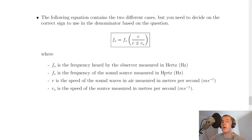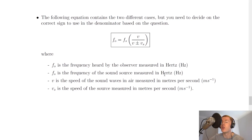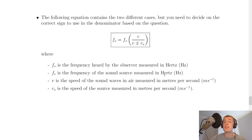How might you remember which sign is positive and which is negative? Here's a funny way to remember it. If an ambulance is coming towards you, that's a negative thing — it suggests you might need an ambulance if you're injured — so you use a negative sign in the denominator. Whereas if an ambulance is moving away from you, that's a good thing because it suggests you don't need one — so that's a positive sign in the denominator. If that helps you remember, great; if not, come up with your own way.